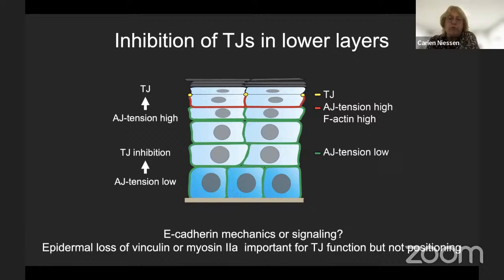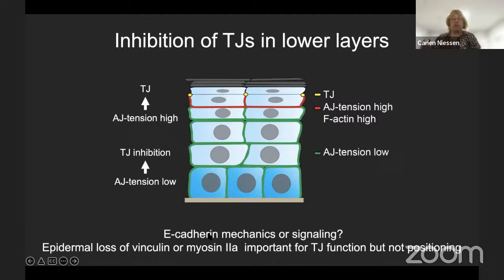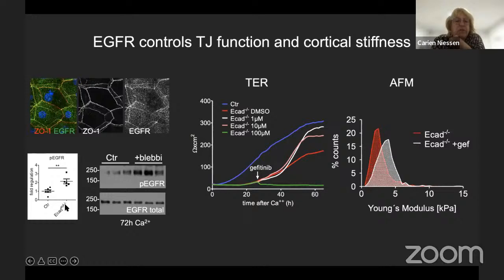Is this important for tight junctions? Yes. In whole-mount tissue imaging, the tight junctional claudin-1 network is still formed in E-cadherin knockouts, but this network now has many breaks. This explains why these mice die at birth due to water loss. More interestingly, whereas tight junctions are normally enriched in SG2, we now see premature tight junction formation in lower layers, and upon loss of E-cadherin, we see increased cortical actin organization in lower layers.